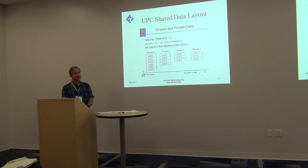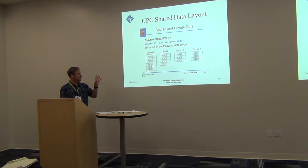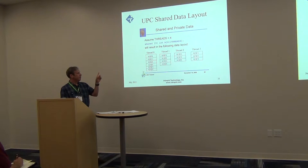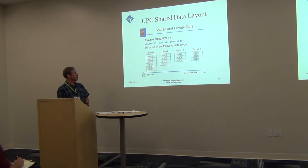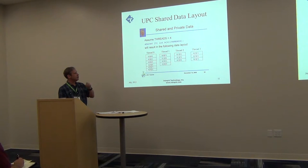Here's an example of block distribution. Usually you want block sizes to be multiples of the array dimension, but this example uses a block size of 3 with 4 threads, which is not a multiple, just to show how distribution works. The first chunk of 3 is on thread 0, the next chunk of 3 on thread 1, the next on thread 2, and it wraps around in chunks of 3; any leftover elements stay at the last thread.